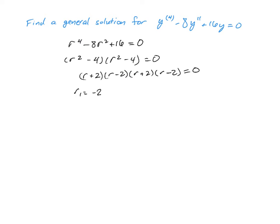So our r1 is -2, r2 is 2, r3 is -2, and r4 is once again positive 2.